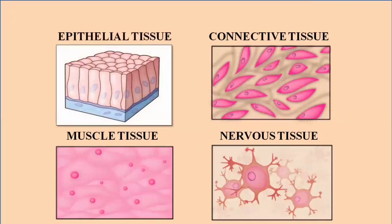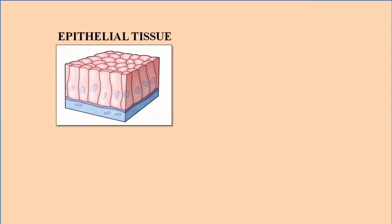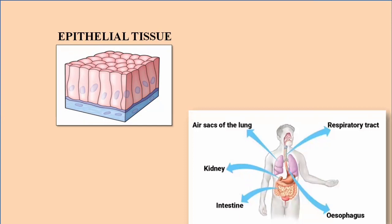Epithelial tissue is the most outermost covering of the human body. It lines the outermost covering and provides protective boundaries to the human body. It lines both the external surfaces and the internal organs of the human body. An example of external protection is the skin, and it also lines the internal organs of the body.